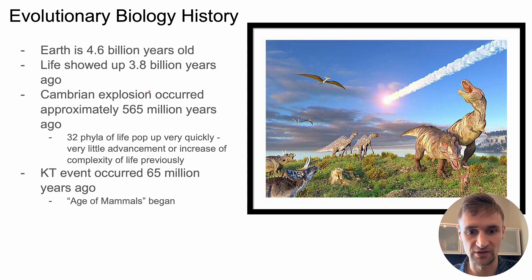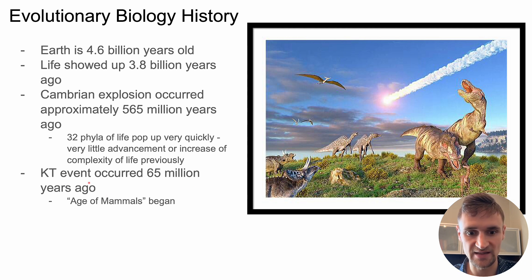Life did very little innovation for 3 billion years, and then in the span of just a few tens of millions of years, basically 32 phyla of life popped up very quickly, whereas there had been very little advancement or increase in complexity of life previously. One of the other major events is that the KT event occurred around 65 million years ago — what Dr. Jack Cruz calls the beginning of the age of mammals.